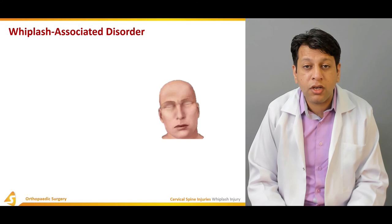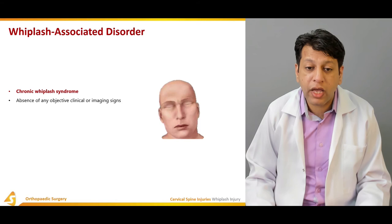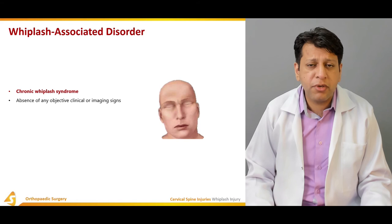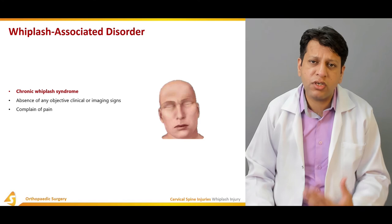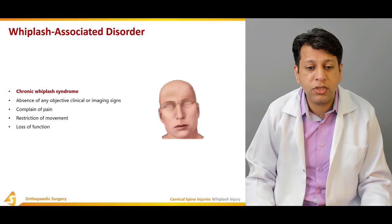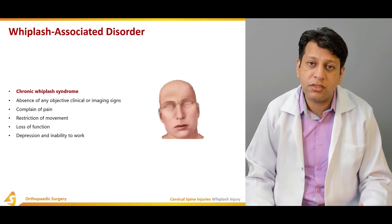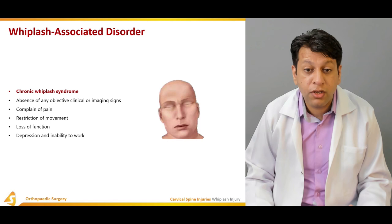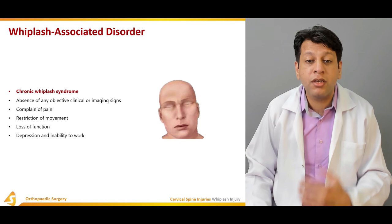There is another term called whiplash associated disorder, which is the chronic term for chronic whiplash injury. There may be associated insufficiency of the anterior longitudinal ligament leading to chronic whiplash syndrome. There is absence of any objective clinical or imaging signs — the patient may not have much pain, stiffness, or loss of cervical lordosis, but may report persistent discomfort and some restriction of movement since the injury. There may or may not be associated loss of function. Sometimes it is only associated with depression and inability to work. X-rays may be normal, and CT and MRI may show no neurological compromise, yet the insufficiency of the anterior longitudinal ligament may still result in chronic whiplash syndrome.